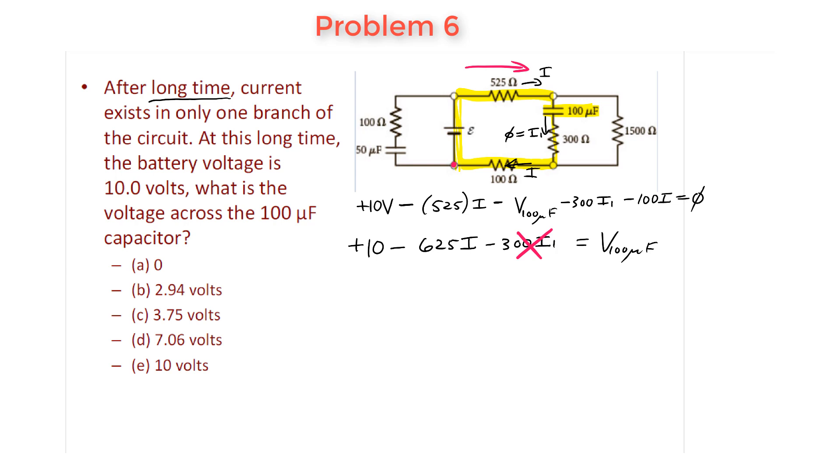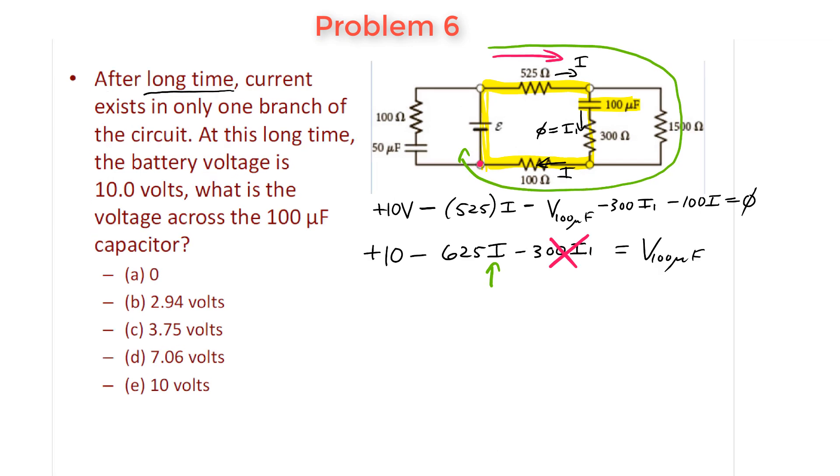So in order to find the voltage across the 100 microfarad capacitor, we simply have to use this expression, but we're still missing something - we still need to find what the current I is. In order to do that, what we're going to do is another loop, except this time we're going to go around the big outer loop. The first thing I encounter is again going to be a 10 volt battery. The next thing is a 525 ohm resistor, there's a voltage drop across that.